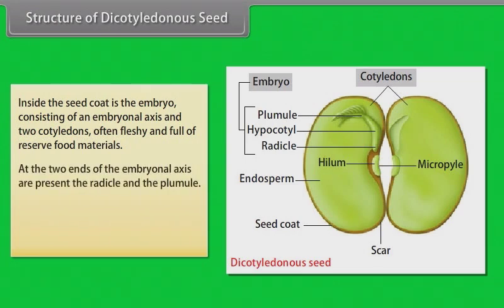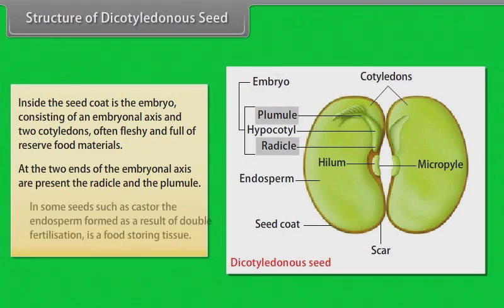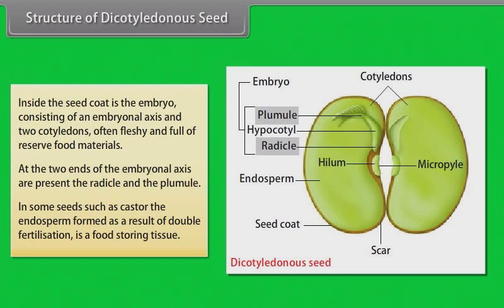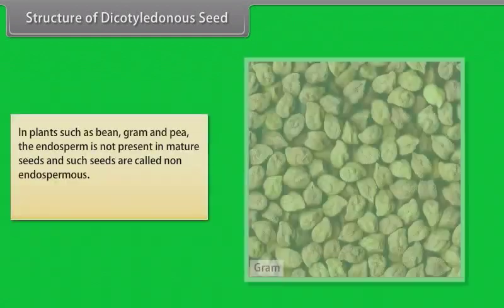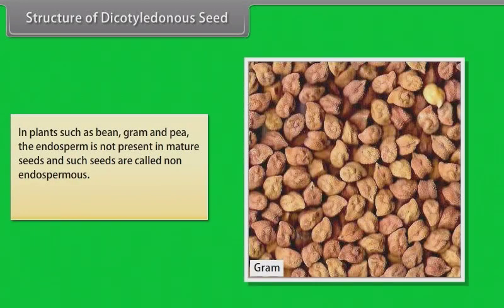At the two ends of the embryonal axis are present the radicle and the plumule. In some seeds such as castor, the endosperm formed as a result of double fertilization is a food-storing tissue. In plants such as bean, gram, and pea, the endosperm is not present in mature seeds, and such seeds are called non-endospermous — example: gram.